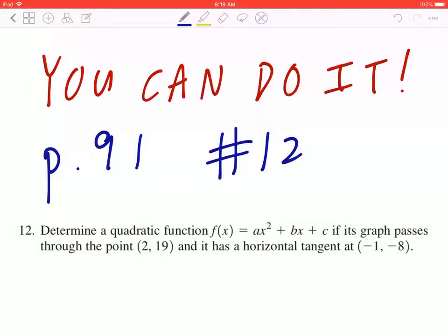Hi everyone, let's take a look at number 12 on page 91. Determine the quadratic function f of x equal to ax squared plus bx plus c if its graph passes through the point 2, 19 and it has a horizontal tangent at negative 1, negative 8.